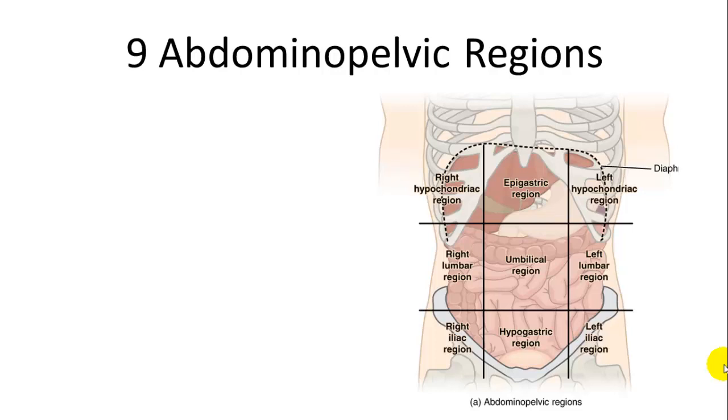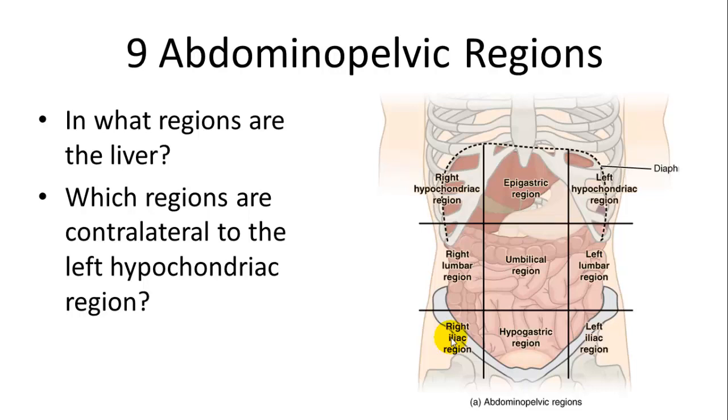We can further divide these same abdominal pelvic regions into nine. And these have more specific names. Hypochondriac, hypo meaning below, chondro referring to the ribs. Epigastric, above the gastric, above the stomach. Left hypochondriac, right lumbar. Lumbar is the region and is also named after the vertebrae. Left lumbar umbilical, which would be where your belly button is. Hypogastric would be below that. So we have epi above, hypo below, and left and right iliac region. In what regions are the liver? We would go right hypochondriac and epigastric, a little bit in the left hypochondriac. And which regions are contralateral to the left hypochondriac region? It would be all these ones on the right, since contralateral means the opposite side.